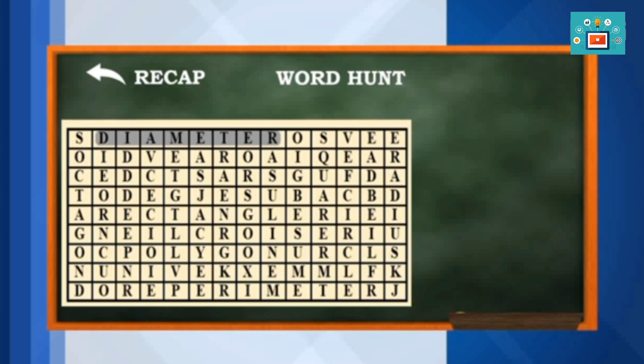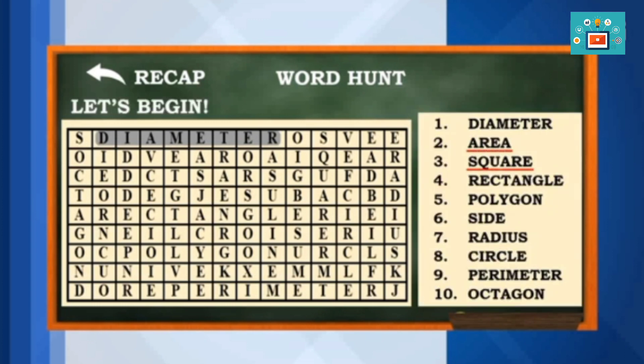Proceed to the second number. Area, square, rectangle, polygon, side, radius, circle, perimeter, octagon.